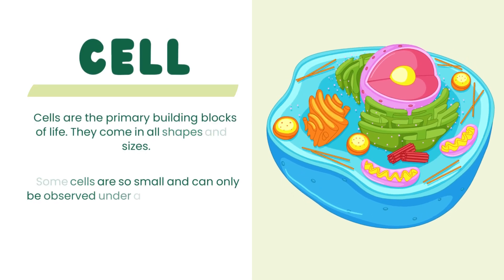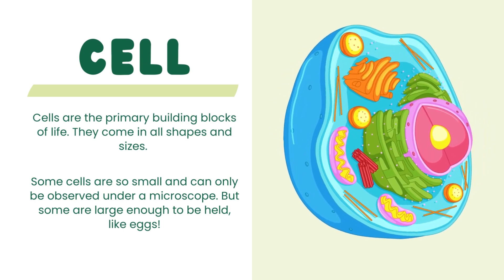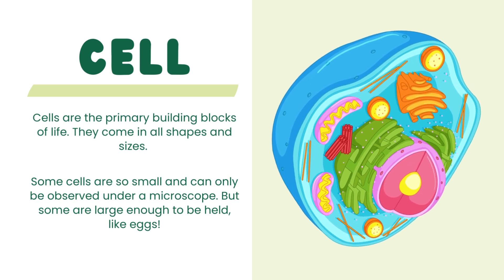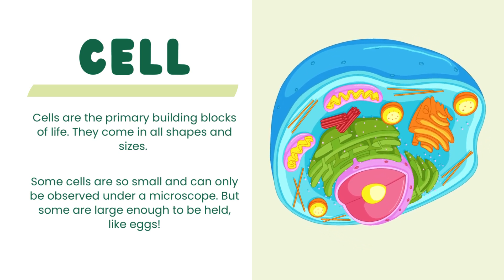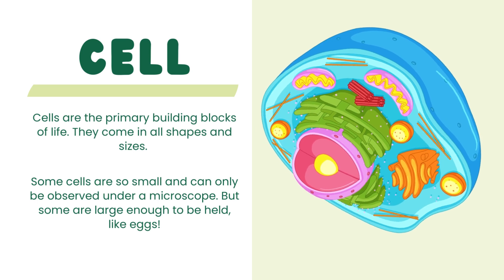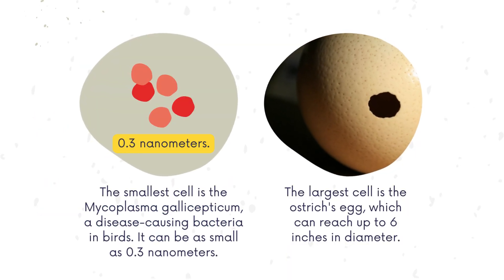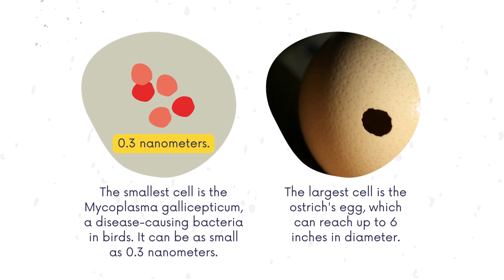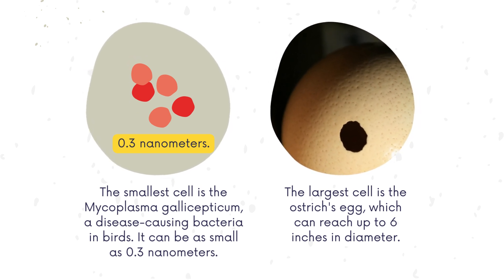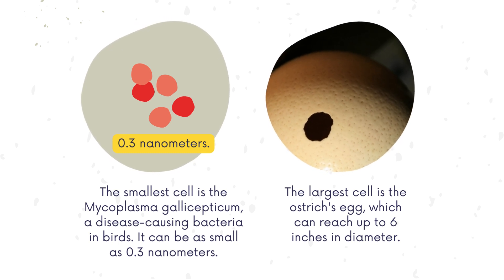Cells are the primary building blocks of life. They come in all shapes and sizes. Some cells are so small they can only be observed under a microscope, but some are large enough to be held, like eggs. The smallest cell is the Mycoplasma gallisepticum, a disease-causing bacteria in birds, which can be as small as 0.3 nanometers.